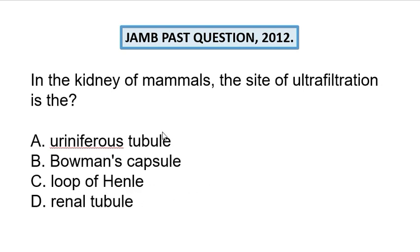Another name for the uriniferous tubules is the renal tubules. The site responsible for ultra filtration is mainly the Bowman's capsule. The kidney is responsible for three things during urine formation: the first is ultra filtration, the second is selective reabsorption, and the third is renal secretion. Ultra filtration occurs in the Bowman's capsule.